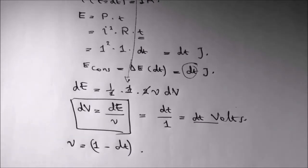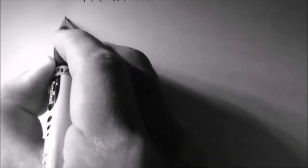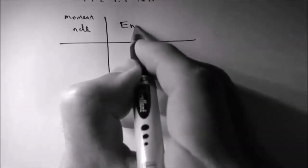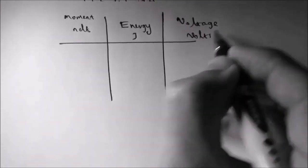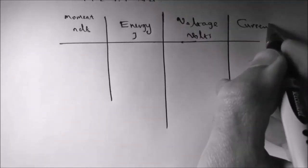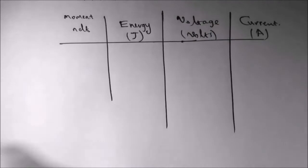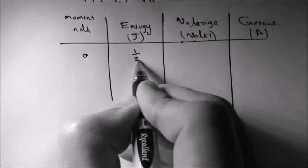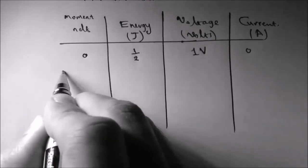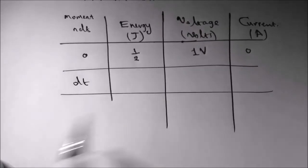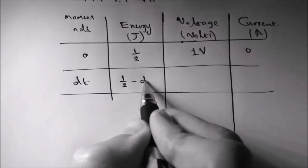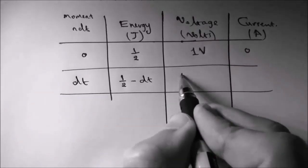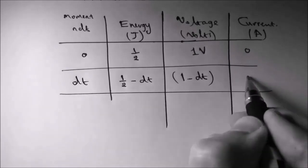Let's make a table to track this. I record the moment in n·dt, the energy in joules, the voltage in volts, and the current in amperes. At the beginning, the energy was 0.5 joules, the voltage was 1 volt, and there was no current. At the first moment when t equals dt, we had a consumption of energy of dt joules, so the remaining energy became 0.5 minus dt joules, and the new voltage became 1 minus dt volts. The current was 1 ampere.